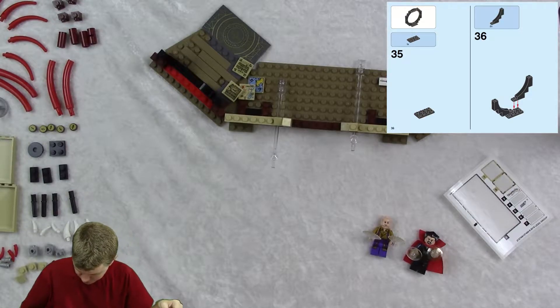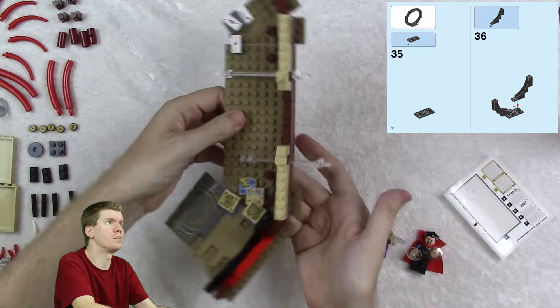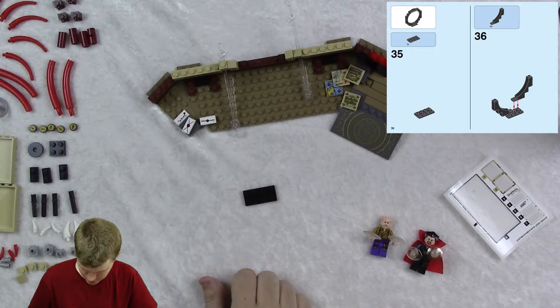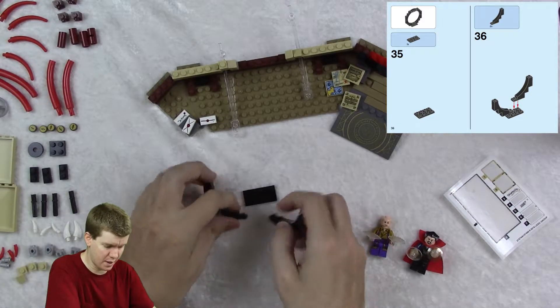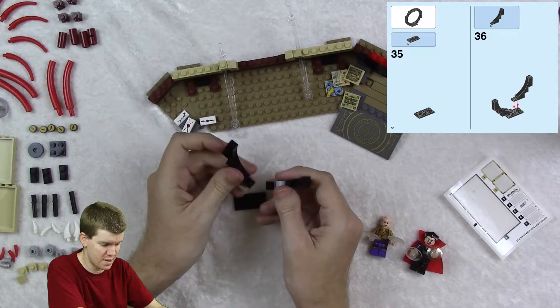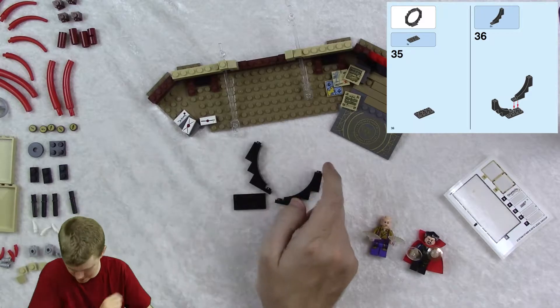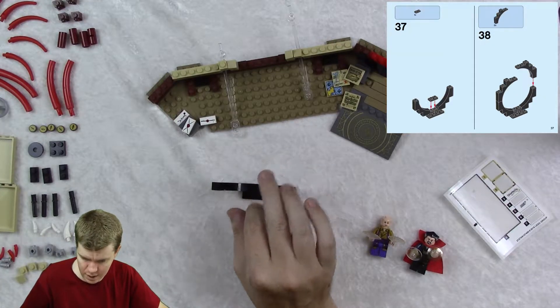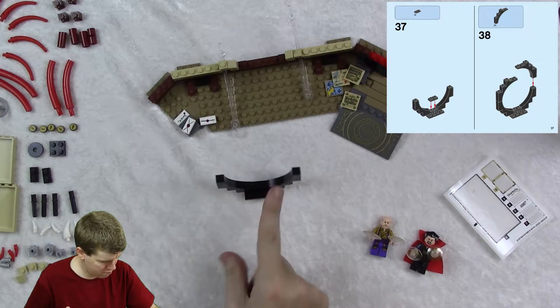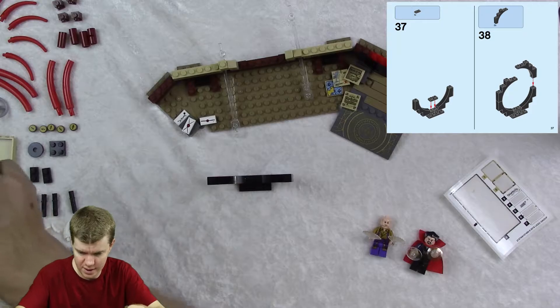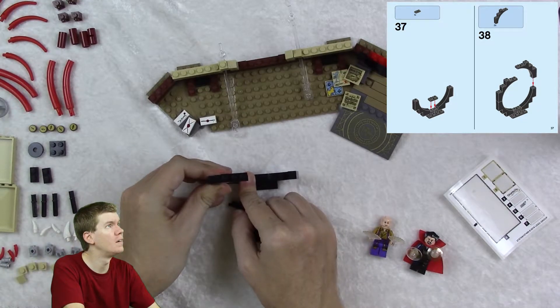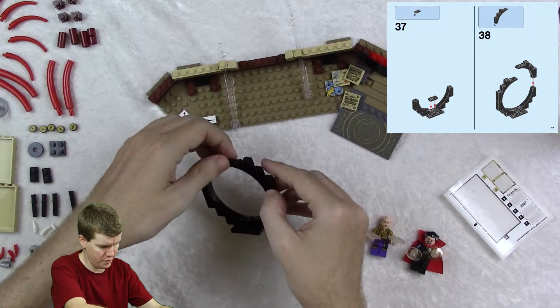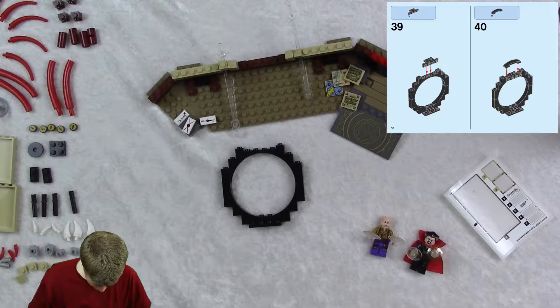We were supposed to have another one. Oh no, only one of those. Okay, all right, we're good. Okay, that's that. Oh, now we're gonna make a cool sort of circle. So I think we're gonna have to end up turning this around, so I'll just do that now. I need one of these and then two of these awesome things.